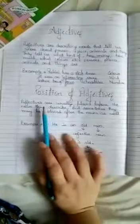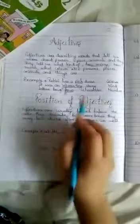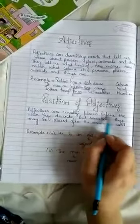Now, next is the position of adjectives. Adjectives are usually placed before the noun. Listen carefully. Adjectives are usually placed before the noun.